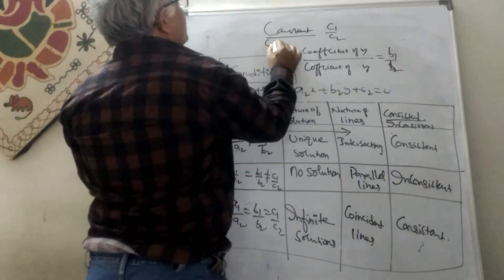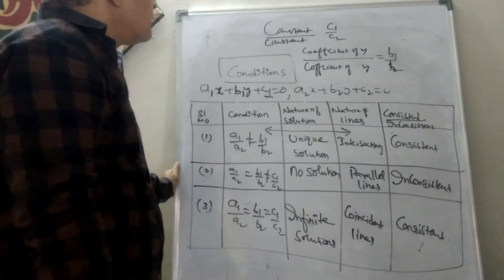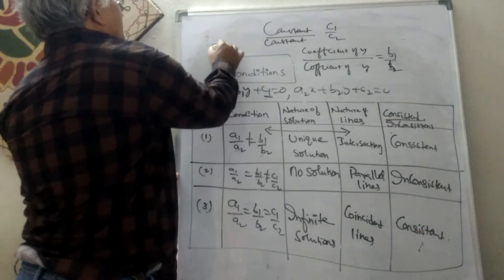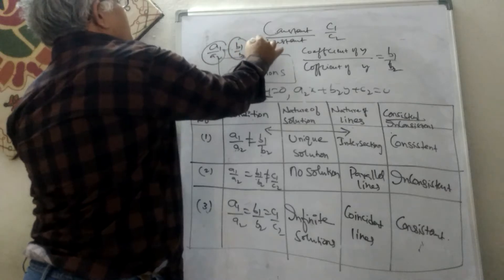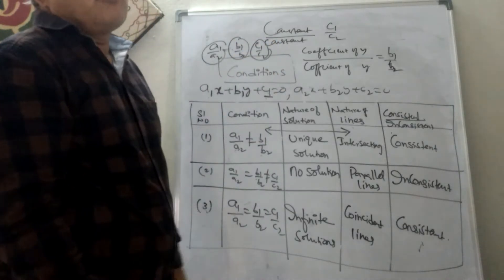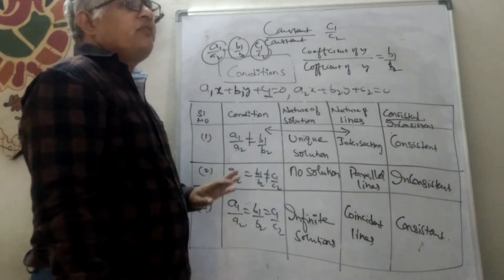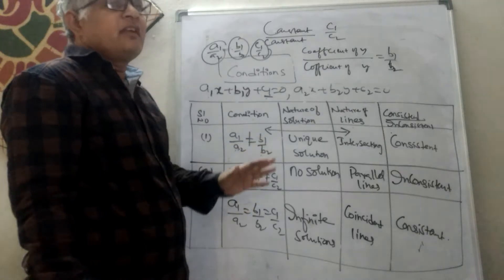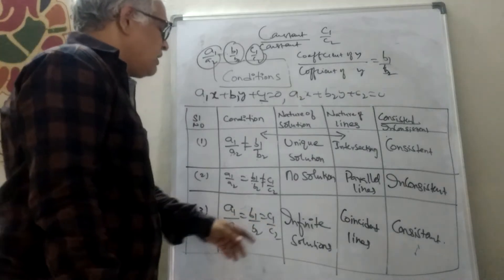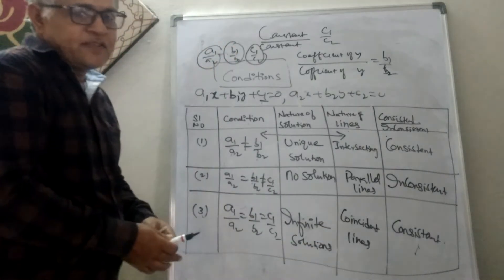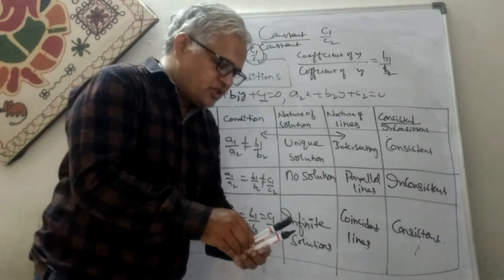So you are talking about three quantities: a1/a2, b1/b2, and c1/c2. We explore the equality among these three. If all of them are equal — for example, if one is 3/4, another is also 3/4, and the third is also 3/4 — then all three are equal.